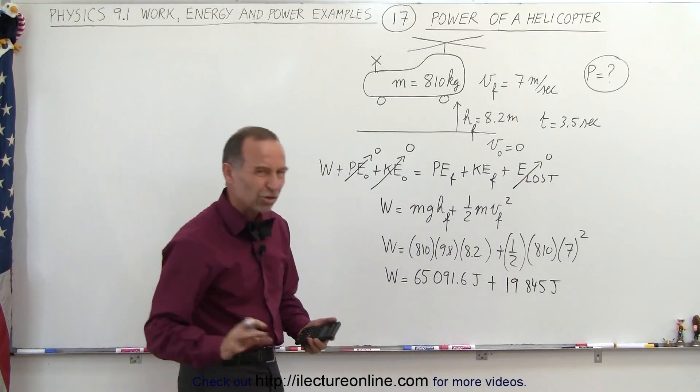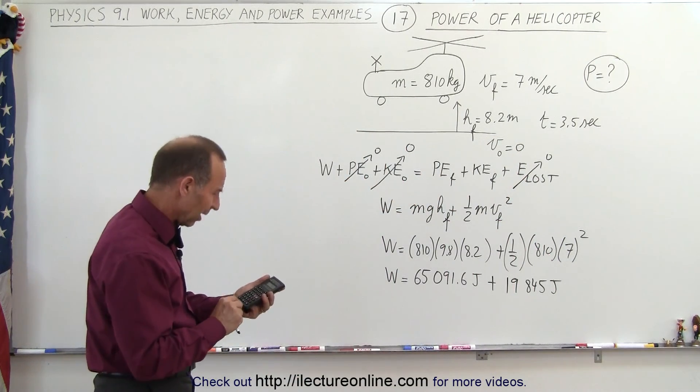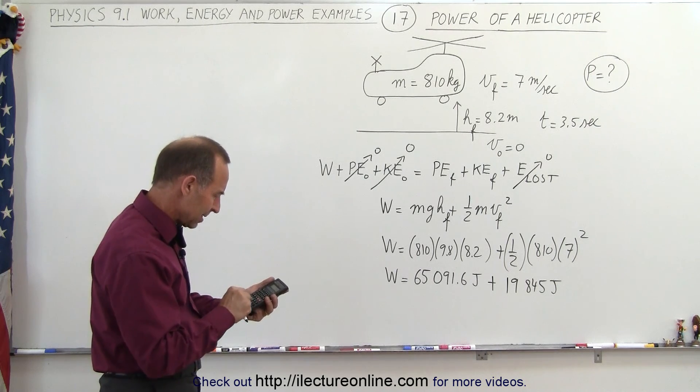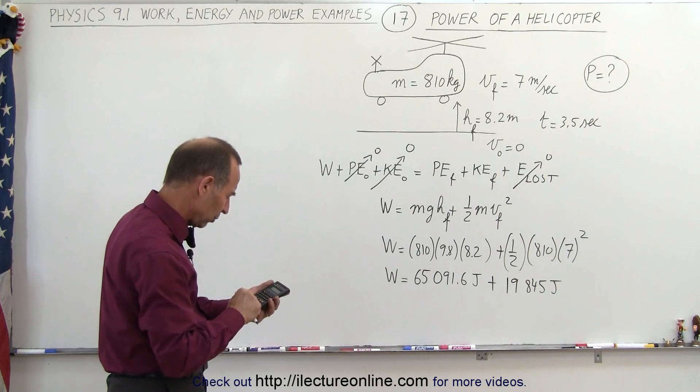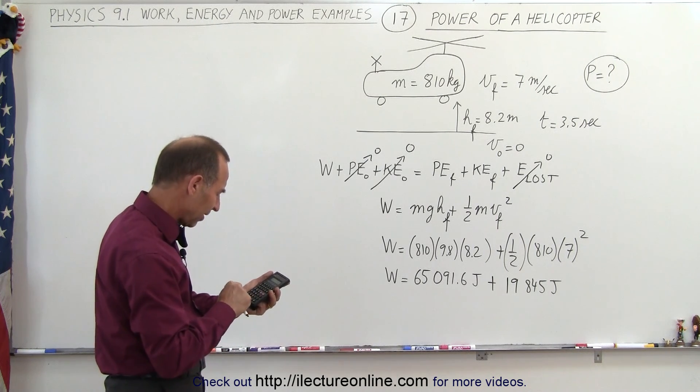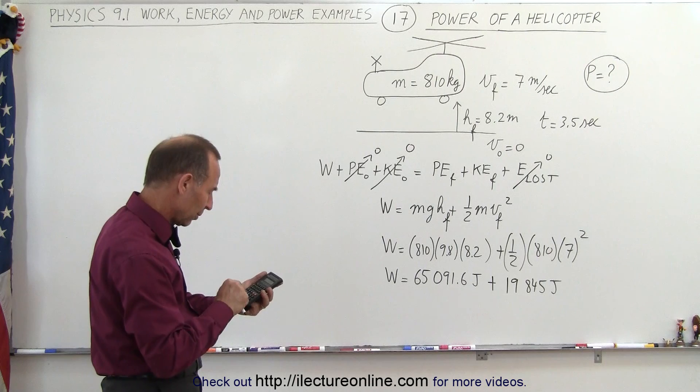Okay, always do a quick check. If the number seems odd, then try again. So 810 times 0.5 times 49, 19,845. Okay, now we add that, plus 65,091.6.